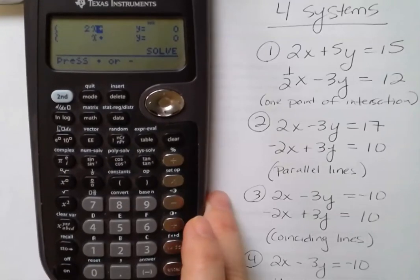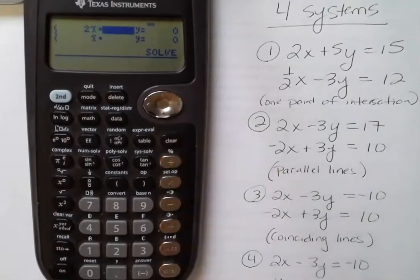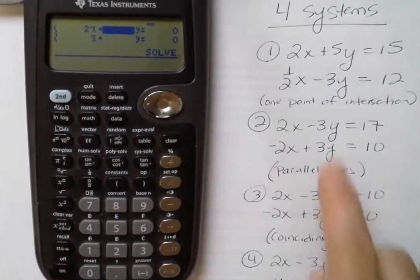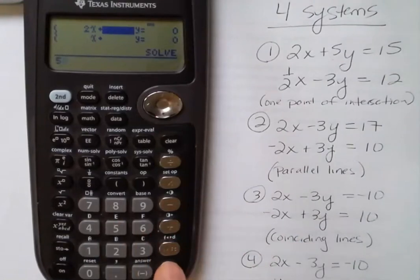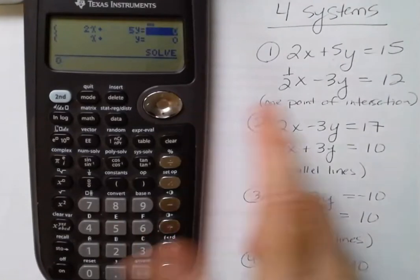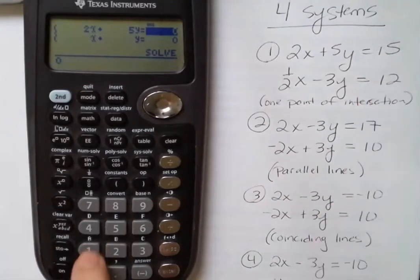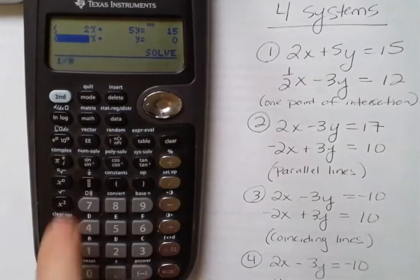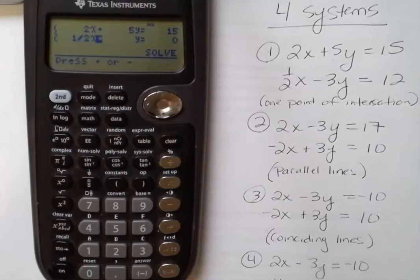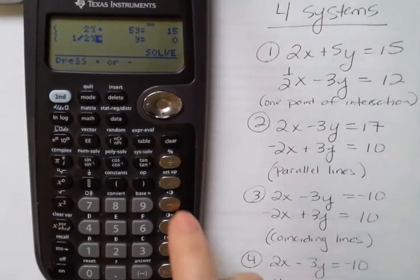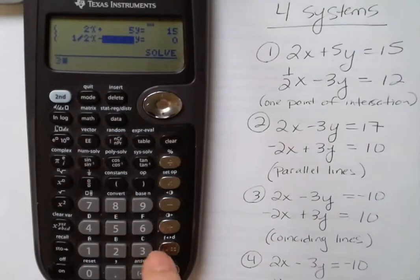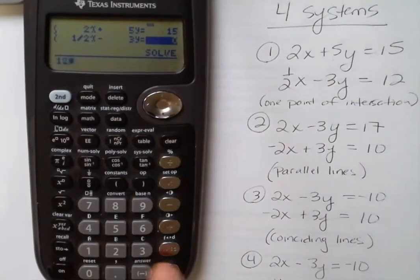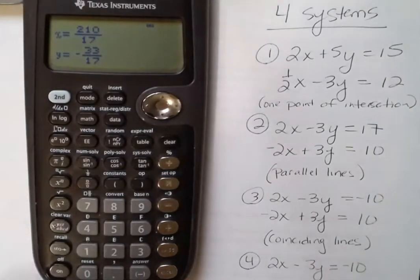I could put plus or minus — I want to keep the plus, so I can use my arrow over if I don't want to change it, or I can hit enter. Then I'm going to do 5 for y, hit enter, and then I'm put over here to enter my 15. I'm going to hit enter and it automatically takes me to the next one. If I want to put a fraction in, I can do that — one half goes in there. Then I have a minus, then 3, then finally 12. I'm going to hit enter to get down to solve and hit enter one more time. There's my point of intersection — very messy answer, very easy with this calculator.